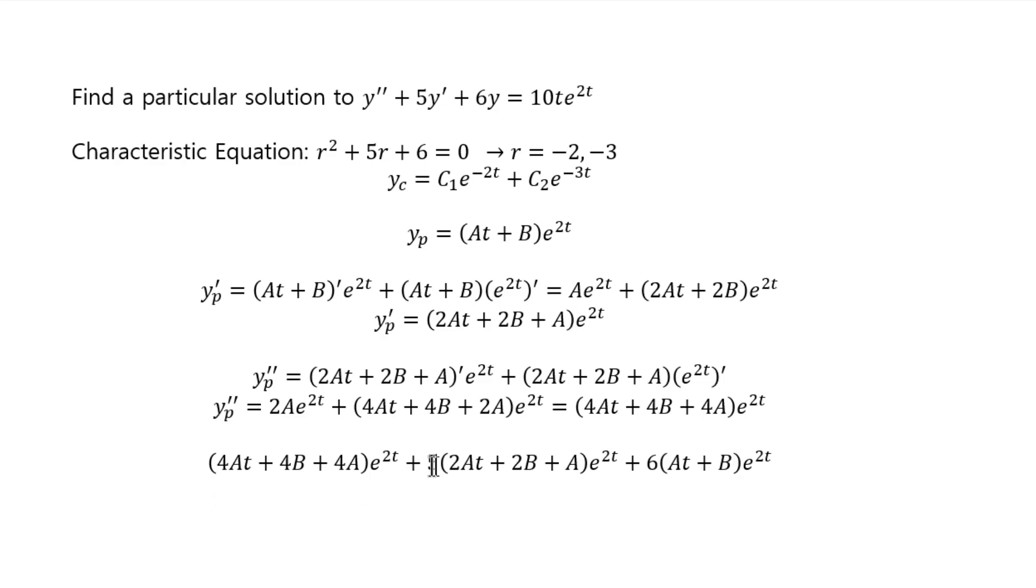So, 4at, 5 times 2 is 10at. 6 times at, so 6at plus 4at is 10. Another 10, so that's 20at, right? So, I wrote down 20at here. 5 times 2 is 10. 6 times 1 is 6b. 6 times 1b is 6b. So, it's again 4 plus 10 plus 6b, which is 20b. And then, 4a plus 5a gives you 9a. So, that's what you get if you simplify.